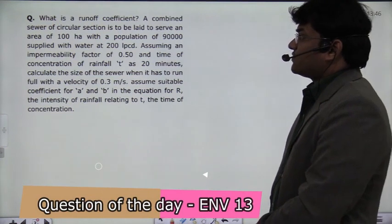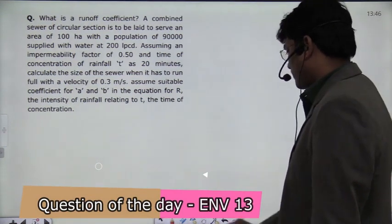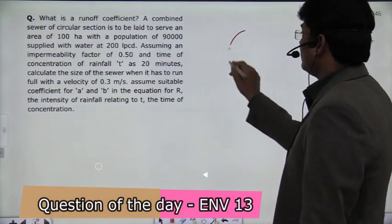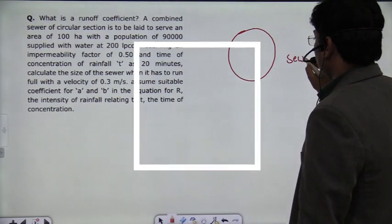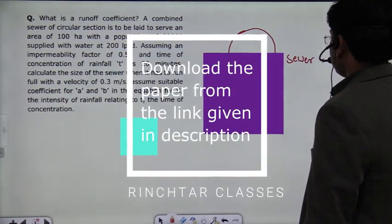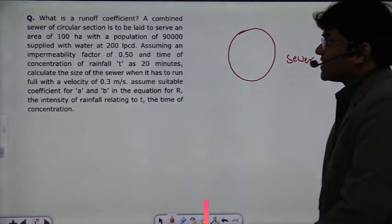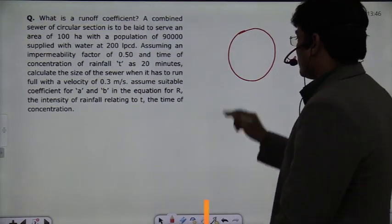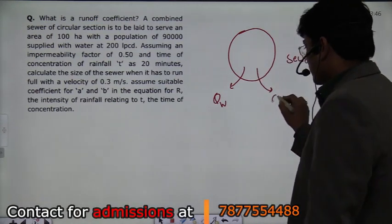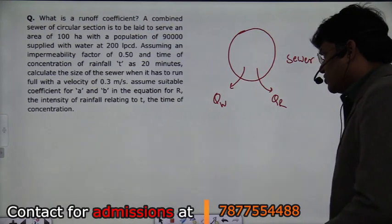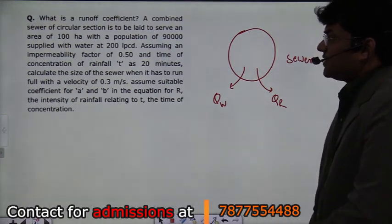A combined sewer of circular section is to be laid. You need to design a combined sewer — basically you need to find the diameter. Combined sewer means that some wastewater will discharge from the city and some rainfall runoff will also come in. So you need to design for QW plus QR, the total flow.